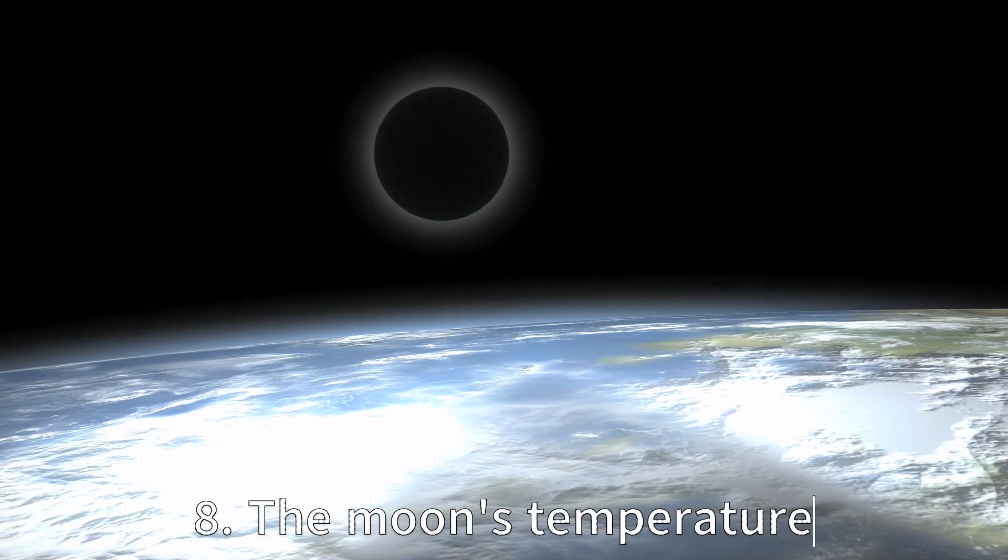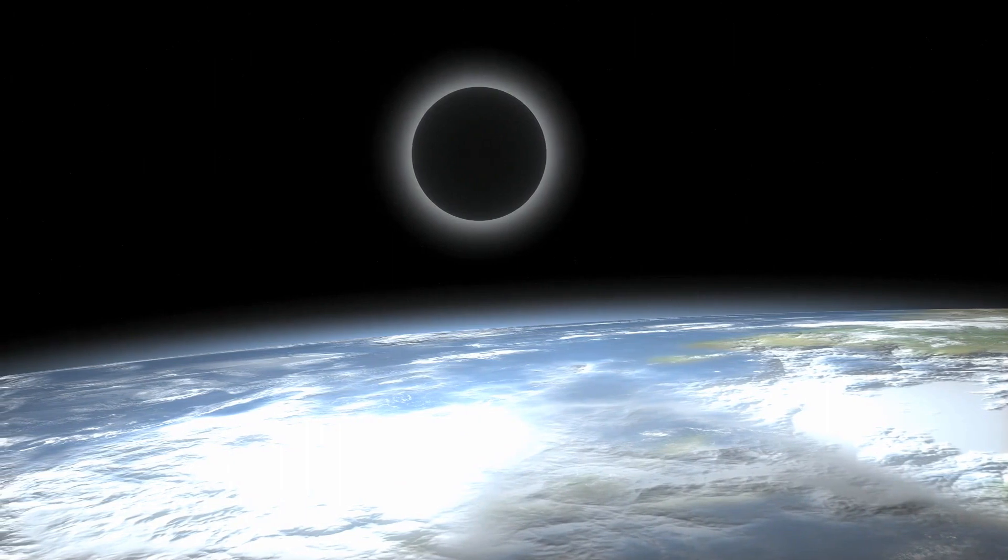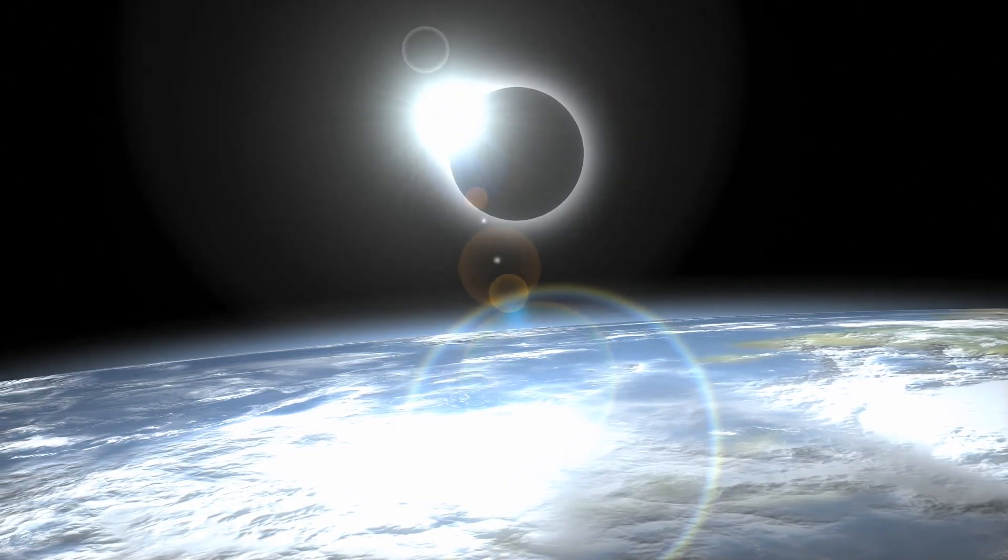The temperature on the dark side of the Moon can drop to as low as negative 280 degrees Fahrenheit, while the temperature on the sunny side can reach up to 260 degrees Fahrenheit.